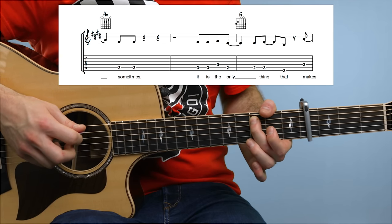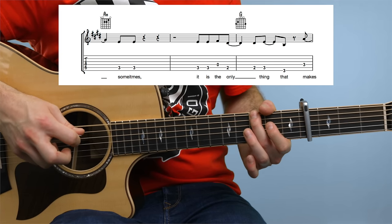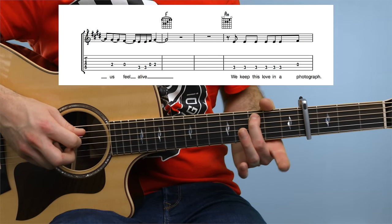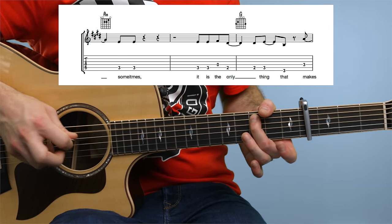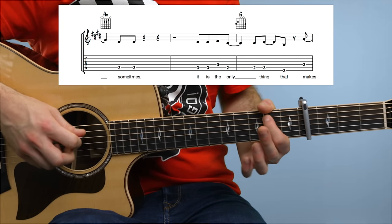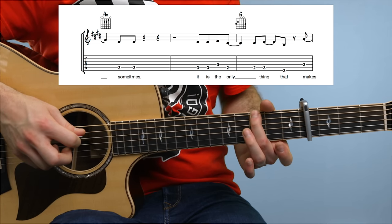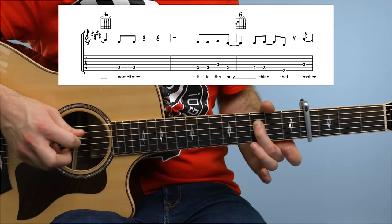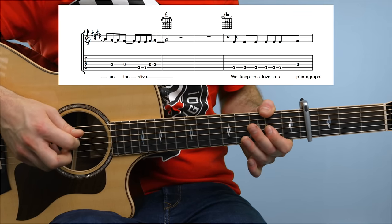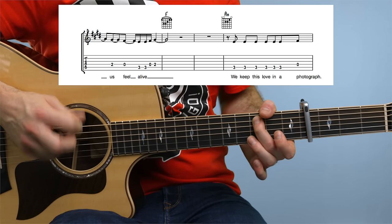And the next phrase goes like this. Double 3 on the fifth string, open fourth, double 2-3 on the fifth string, 3 on the top, 3 on the fourth string, 2, open. Quickly play double 3 on the fifth string, 0-2 on the fourth.